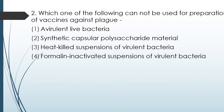Question No. 92: Which one of the following cannot be used for preparation of a vaccine against plague? Options: avirulent live bacteria, synthetic capsulopolysaccharide material, heat-killed suspension of virulent bacteria, formalin-inactivated suspension of virulent bacteria. The correct answer is Option 3 — a heat-killed suspension of virulent bacteria cannot be used to prepare a vaccine against plague.